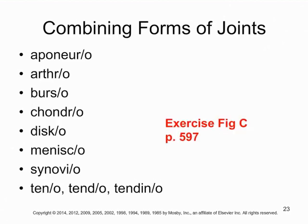In addition to combining forms for the skeletal system, there are also combining forms for joints. Aponeuro goes for aponeurosis. Arthro is the generic word for joint — if you're not localized to one particular joint, use arthro. Chondro means cartilage. Disco relates specifically to an intervertebral disc. And tenno, tendo, and tendino all relate to tendon — they can be used interchangeably, though some are more common in certain contexts.